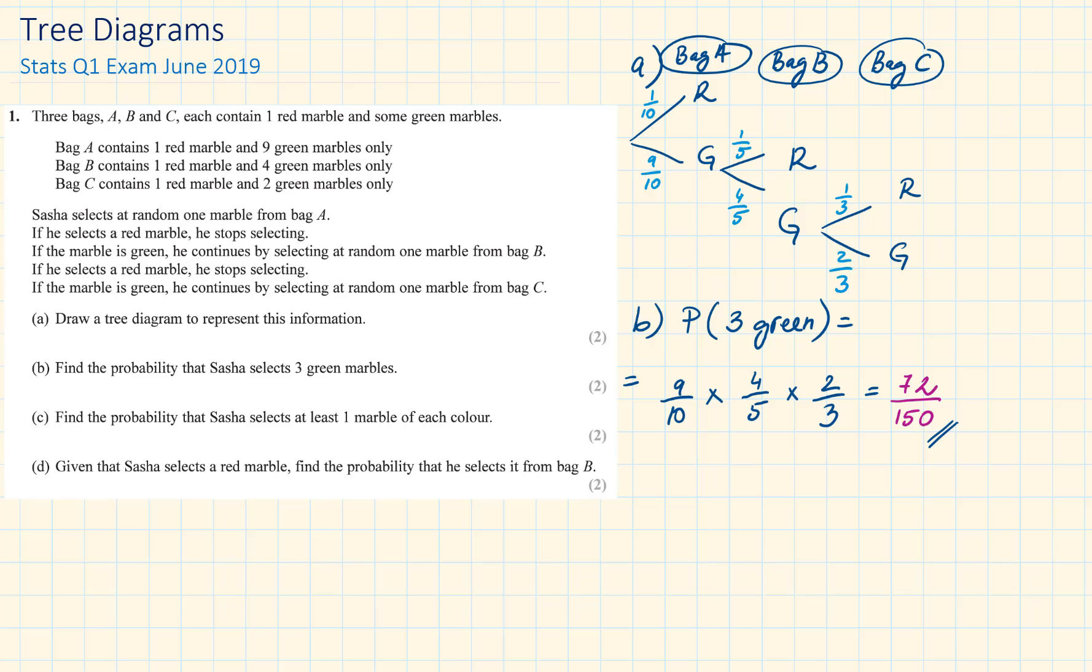Part C. Find the probability that Sasha selects at least one marble of each color. There are two ways that he can do this. If we are picking a green then a red, the probability of this is 9 over 10 times 1 over 5. And another way, if we are picking a green, a green and then a red. The probability of this is 9 over 10 times 4 over 5 times 1 over 3. So our answer is 21 over 50.